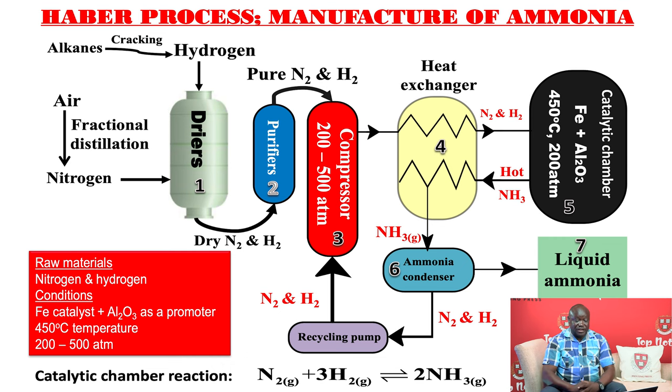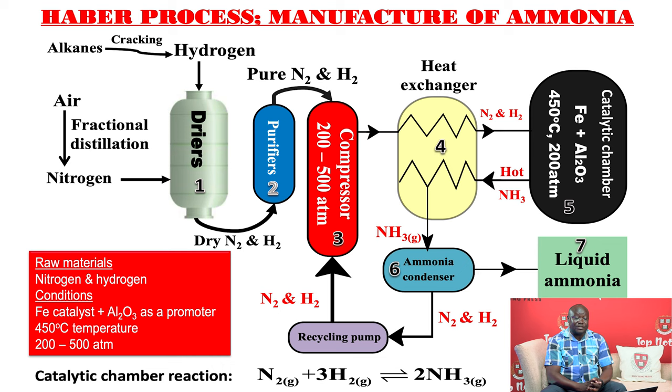After that, the nitrogen and hydrogen gases are compressed to a pressure between 200 to 500 atmospheres. Why do we compress the gases? It is in order to shift equilibrium to the right — or in simpler terms, to bring the molecules together. Remember, the nitrogen molecule has triple bonds that require a lot of energy to break, so we need high pressure to bring the gas molecules together and increase the frequency of effective collisions. Once compressed, the gases are passed straight to the catalytic chamber because we need to activate the reaction.